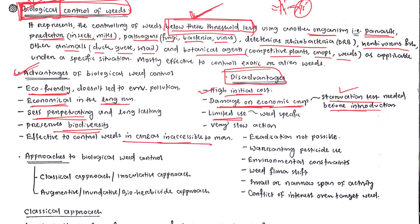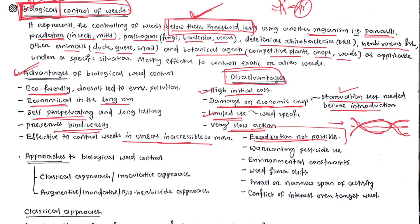Biological weed control has limited use because it is weed-specific — unlike broad-spectrum herbicides that control broadleaf weeds, grass weeds, and sedges, it cannot control multiple weed types. It is also very slow in action; herbicides can kill weeds within one to two weeks, but biological weed control is much slower. Eradication is not possible — once weed population goes down, the insect population also goes down, and then the weed population rises again, creating a balance.